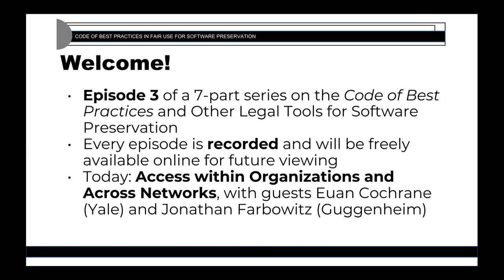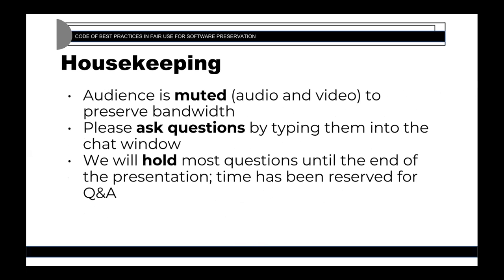Our next guest is Ewan Cochran. Ewan is the digital preservation manager at Yale University Library, where he leads a team that preserves digital assets from across the libraries, archives, and museums on campus. He is also the primary investigator on the EaaSI program of work and has been an emulation advocate and user since the mid-1990s when he was active in the Amiga emulation scene.